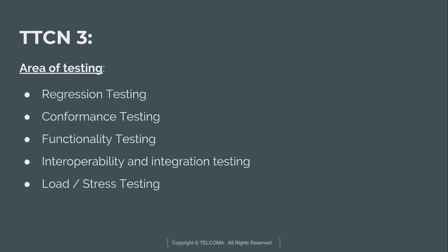The first area is regression testing. Regression testing is a software testing method used to confirm that a recent program or code change has not adversely affected the existing features of the software. We test the software to ensure that newly added code or features do not affect the older version.